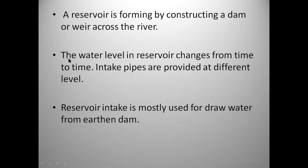A reservoir is formed by constructing a dam or weir across the river — water from the river is stored by constructing a dam in the reservoir. The water level in the reservoir changes from time to time, so intake pipes are provided at different levels. Reservoir intake is mostly used for drawing water from an earthen dam.